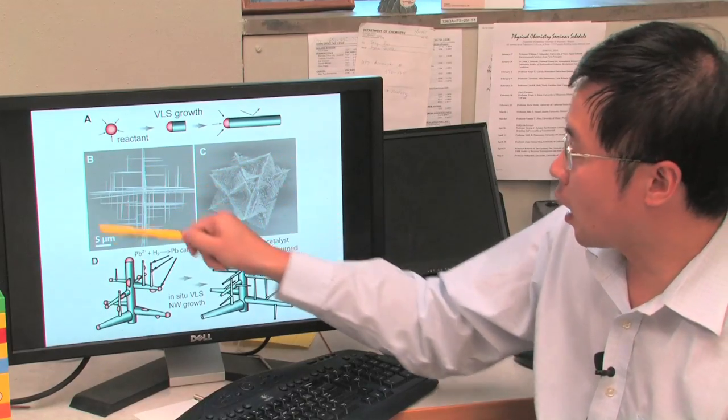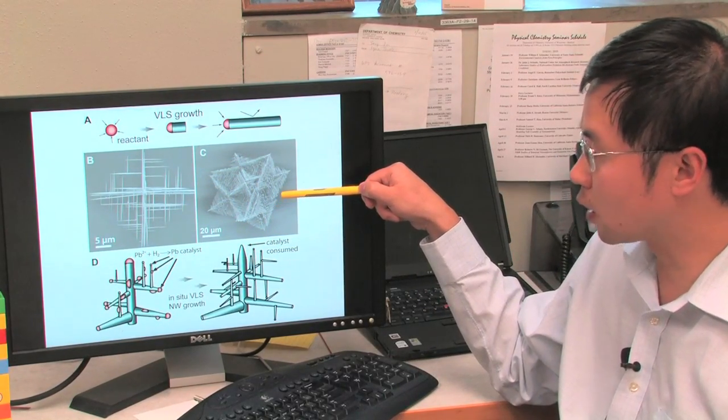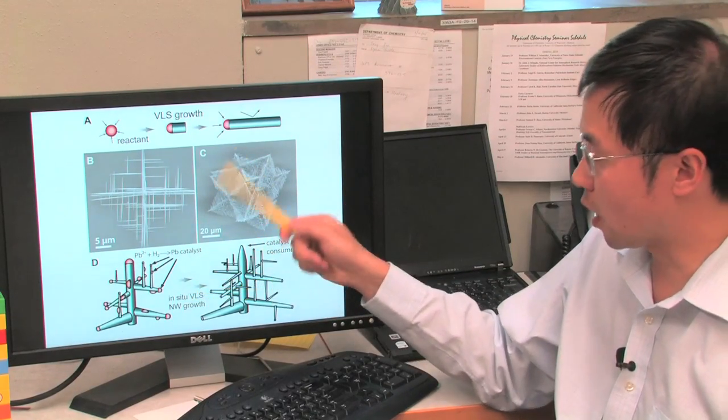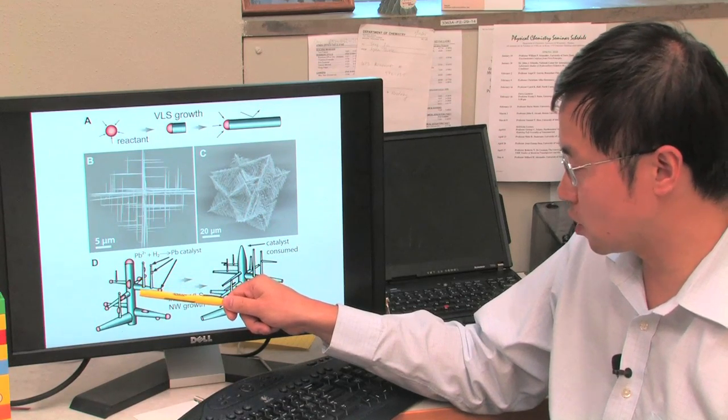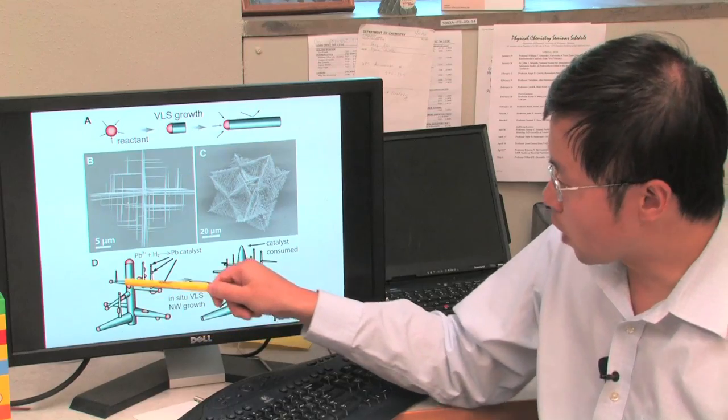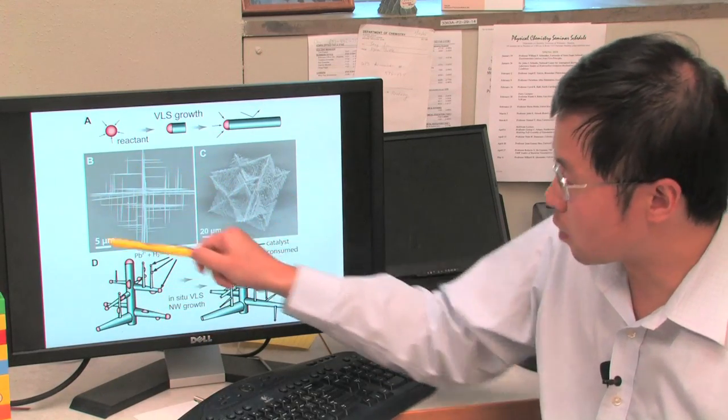behind the hyperbranched lead sulfide lead selenide nanowire structures that we saw earlier, which was really a special case of the VLS growth in which the metal catalysts were generated in situ in a self-catalytic fashion continuously so that we have many level branches growing on top of each other to give you this hyperbranched morphology.